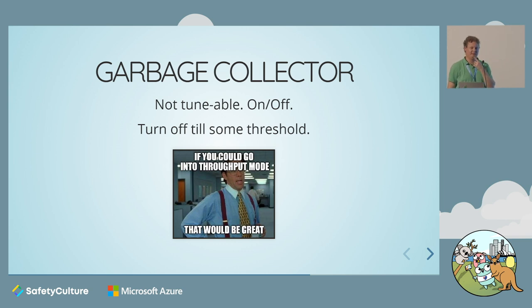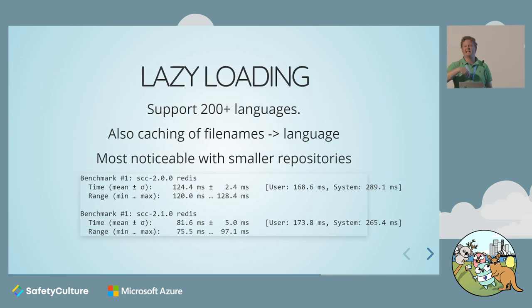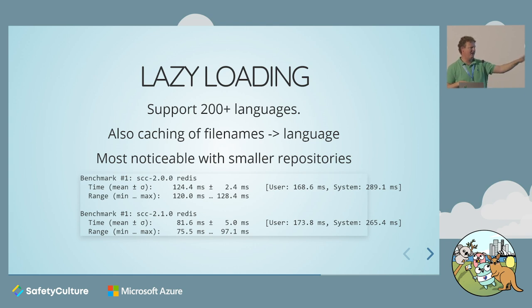Another big issue is the garbage collector. I don't like the GC in Go mostly because you can't tune it — you basically get on or off. The annoying thing is it's optimized for latency, not throughput, so it's great for HTTP services. I would love to be able to say 'go into throughput mode, I can deal with GC collection pauses' — but I can't. So in SCC I just turn it off until it hits some threshold and then turn it back on. I also do lazy loading — it supports 200 languages, and because we've got to turn them into a trie structure to work out what to do next, we only load them as we need them. I also added caching of file names to languages, because main.go appears in a lot of codebases — there's no point working out what language it is.